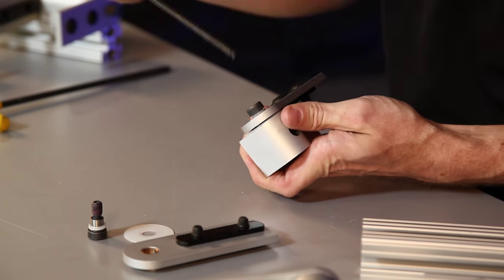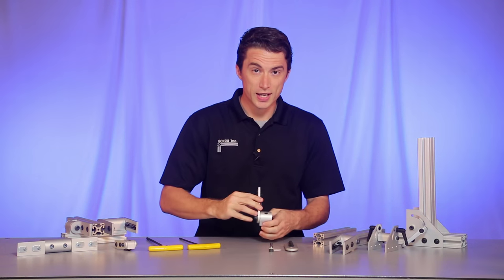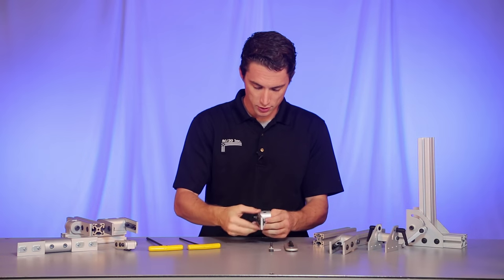Go ahead and finish that off with our wrench, get that nice and snug. Now once we have that tightened down, you can see we still have full range on our dynamic pivot.